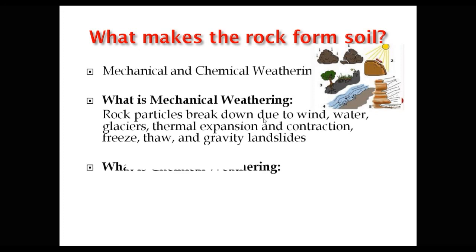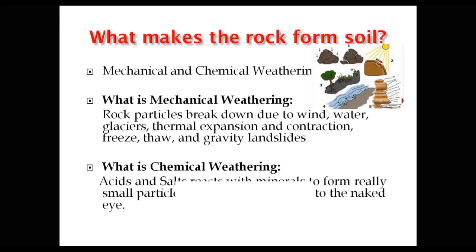What is the second form? That is chemical weathering. Essentially, we're talking about acids and salts reacting with minerals to form really small particles. Those particles are so small that sometimes they're not visible to the naked eye. This is the process of chemical weathering. See you guys in the next video.